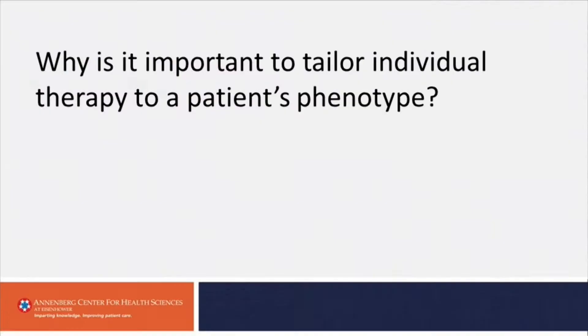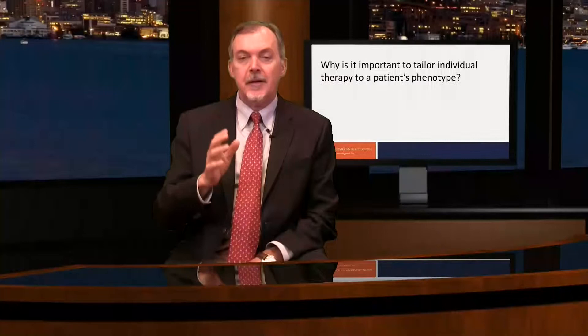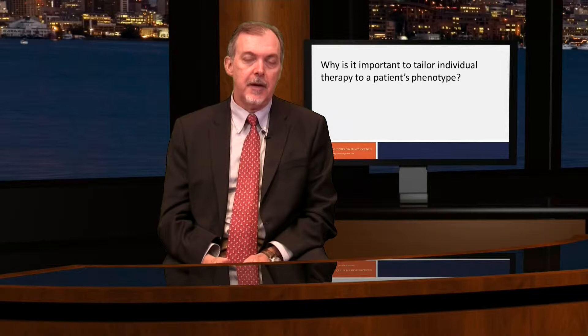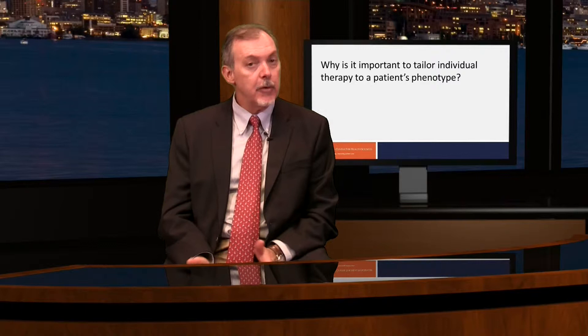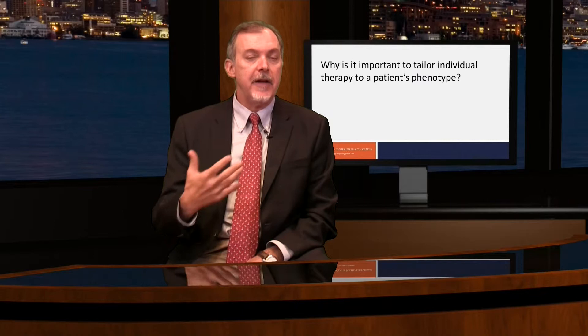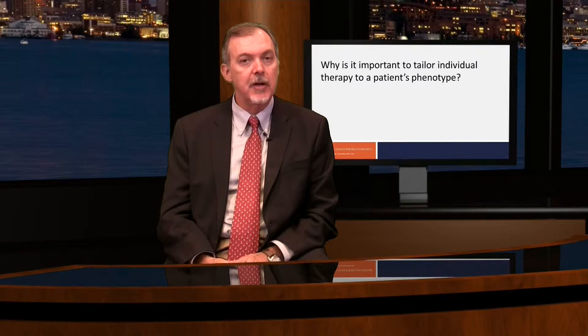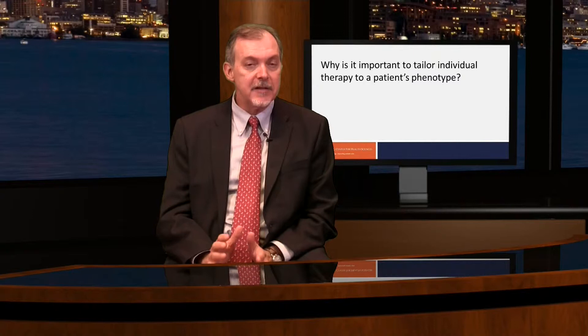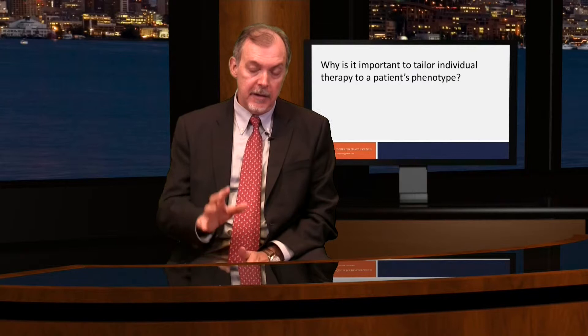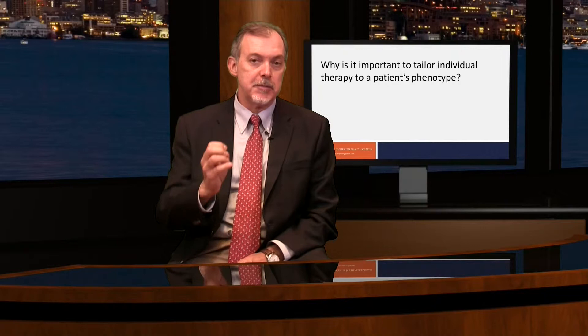Why is it important to tailor individual therapy to a patient's phenotype? By using biomarkers and identifying a patient's inflammatory phenotype, it gives us a much better probability of success with the therapy we're about to choose. For example, if a patient was referred to me with very severe asthma and was failing inhaled corticosteroid therapy, and I obtained an exhaled nitric oxide and found that the level was 10, then in all likelihood this patient was being treated for a non-type 2 form of asthma with a drug that had a low probability of working. In that situation, it would be difficult because we have very few drugs now that are specific for that phenotype.